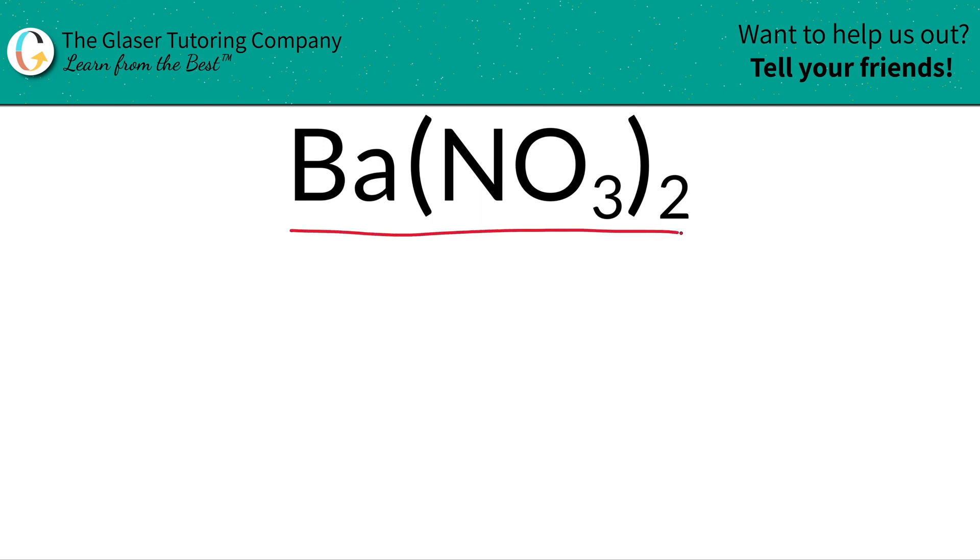So how do we find the percent composition of each particular element inside of barium nitrate? Well, it's not bad. First part is to find the total mass. So let's find that out.